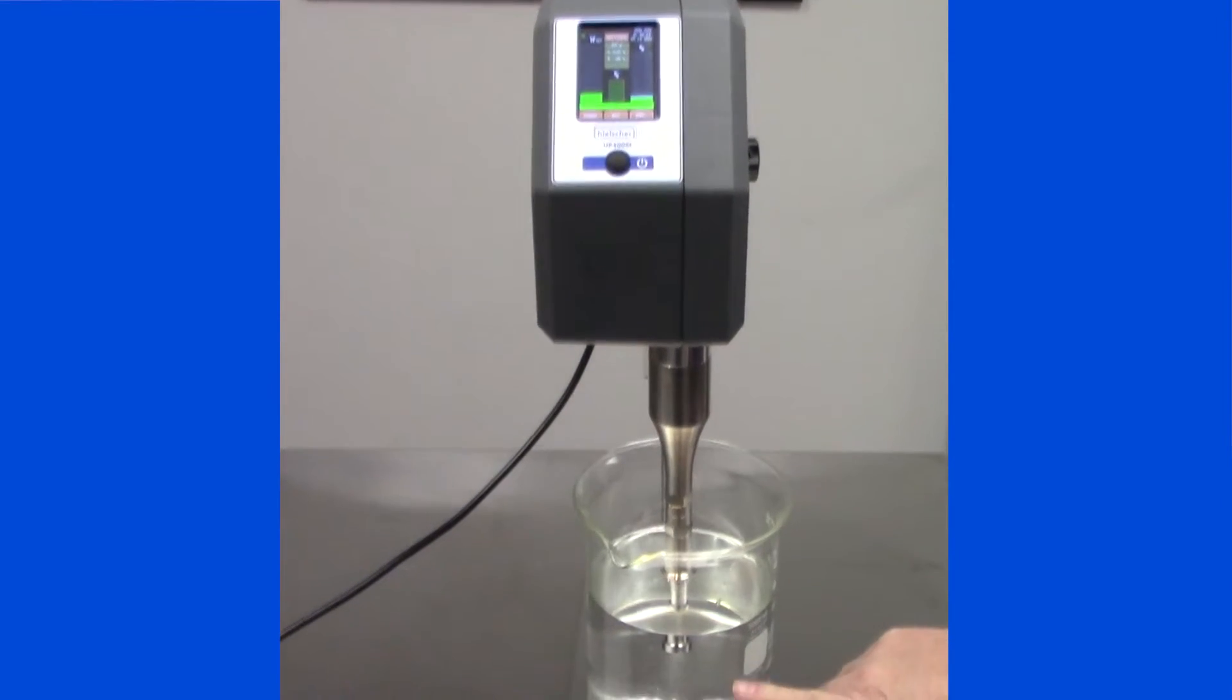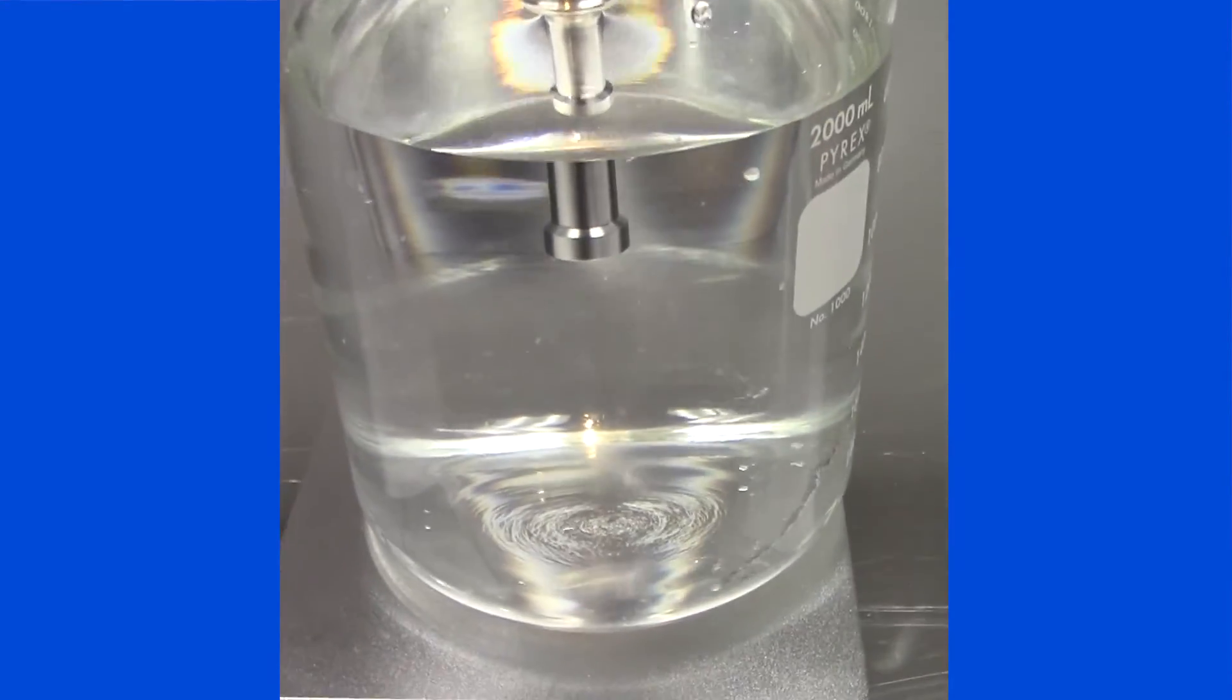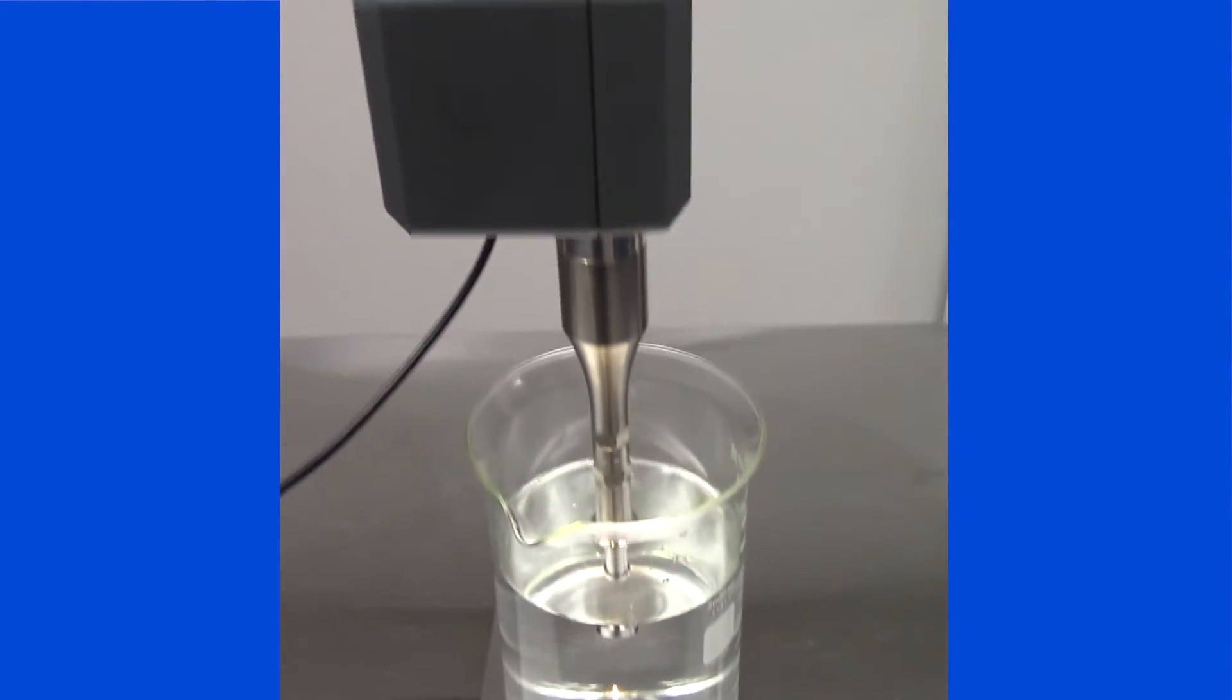You can see the cavitation field has formed mostly directly right under the sonotrode. I'm going to change the intensity by increasing the amplitude, thus making the cavitation field more intense.